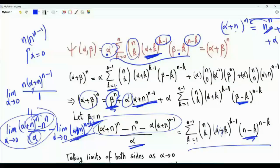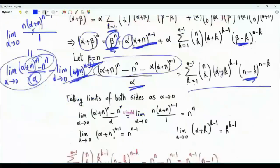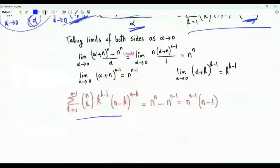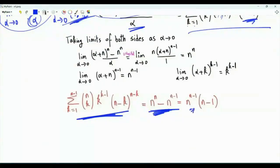So this limit is n to the power n, and that limit is n to the power n minus 1. That gives our result: the summation of interest equals n to the power n minus n to the power n minus 1, which can also be written as n to the power n minus 1 times the quantity n minus 1.